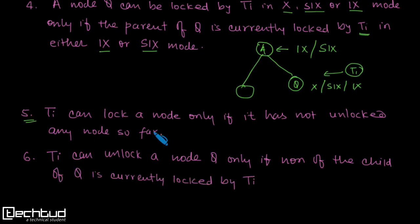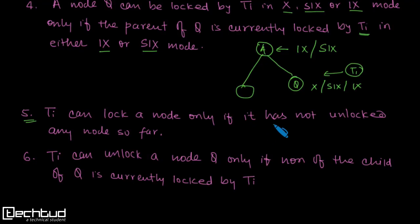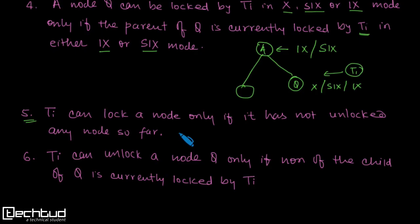The next rule is very similar to two-phase locking: transaction ti can get a lock only if it has not unlocked any node so far. If transaction ti has started unlocking, it cannot be granted further locks. If transaction ti has not unlocked any item so far, then we can grant a new lock — once unlocking starts, it cannot lock new items.